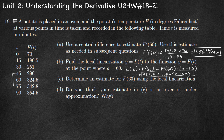Part C: determine an estimate for f of 63 using the local linearization. f of 63 is approximately equal to L of 63. Using the equation from part B: 324.5 plus 1.56 times (63 minus 60) gives 329.18. So 329.18 degrees Fahrenheit is our approximation for f of 63.